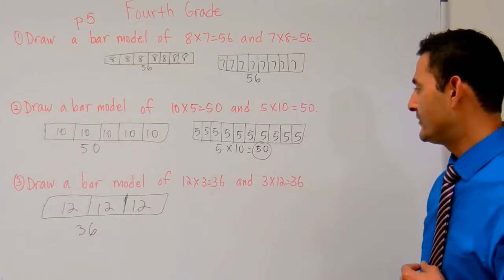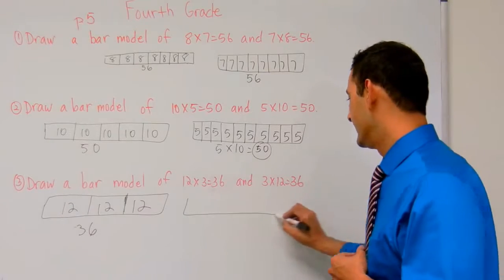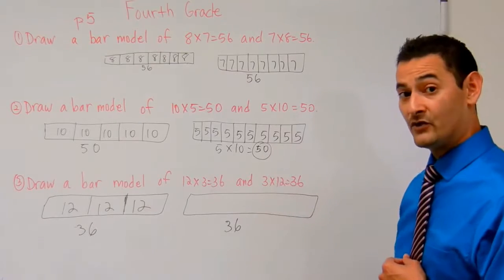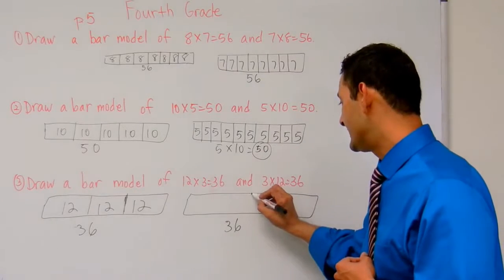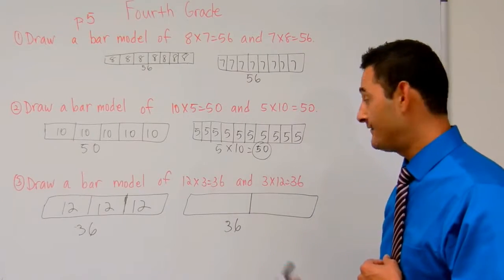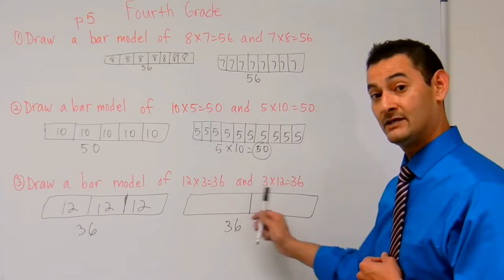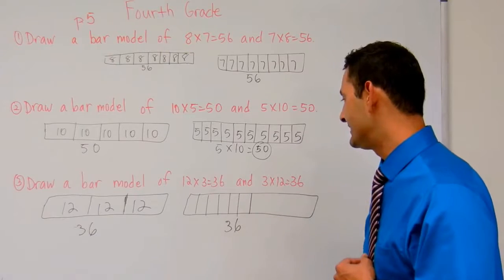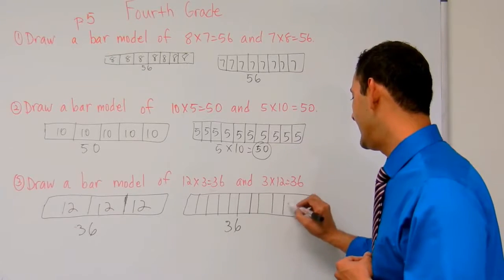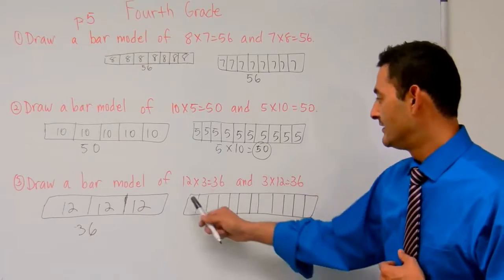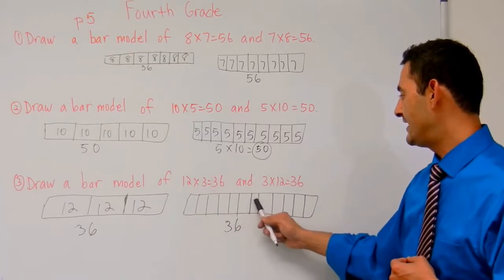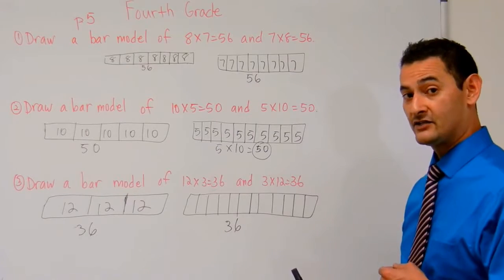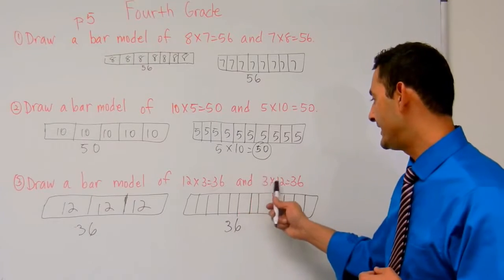Now let's take a look at 3 times 12. I'm going to draw my bar model — that's going to be 36, and we're doing it 12 times. If I split it in the middle, that's half, so I need 6 and 6 because 6 plus 6 is 12. So 1 through 12 sections. Each of these pieces will be worth 3, because we're doing 3 times 12.